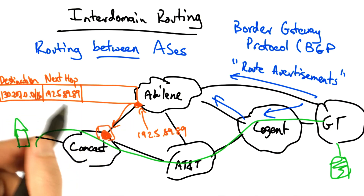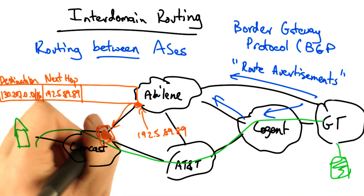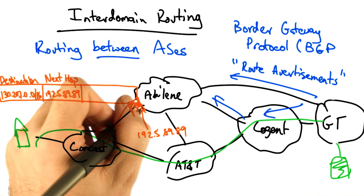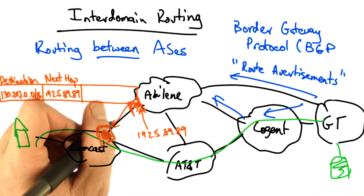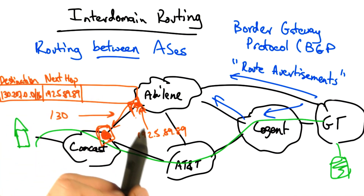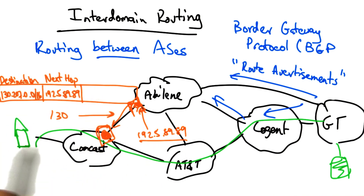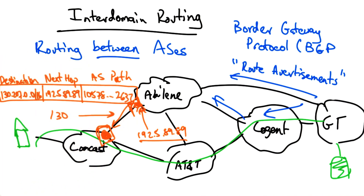The Comcast router knows how to reach that NextHop IP address because its border router and the border router in the neighboring AS are on the same subnet, typically a slash 30 subnet. Therefore, this IP address is reachable from the Comcast border. A third important attribute is what's called the AS path, which is a sequence of AS numbers that describe the route to the destination.